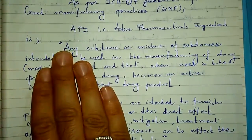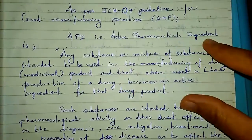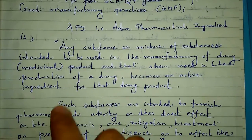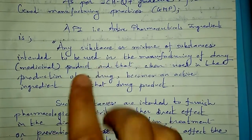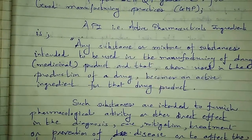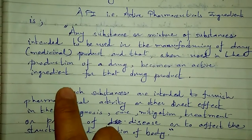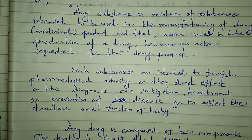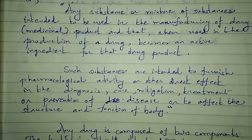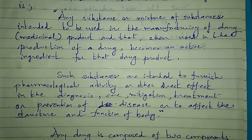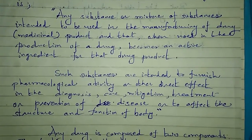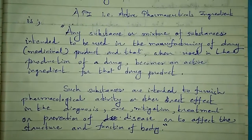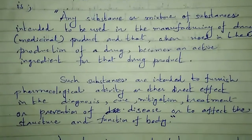The definition covered in ICH Q7 guideline states: API is any substance or mixture of substances intended to be used in the manufacturing of a drug or medicinal product, and that when used in the production of a drug becomes an active ingredient of that drug product.